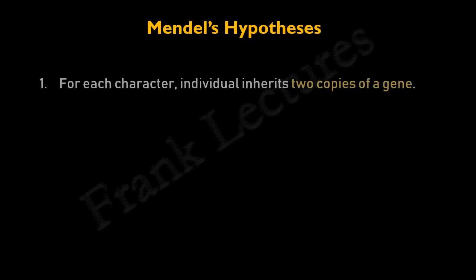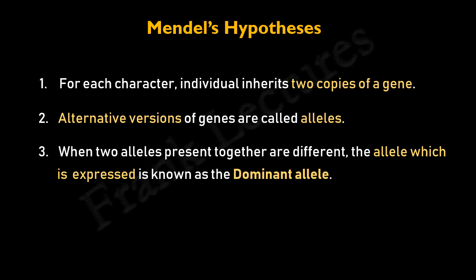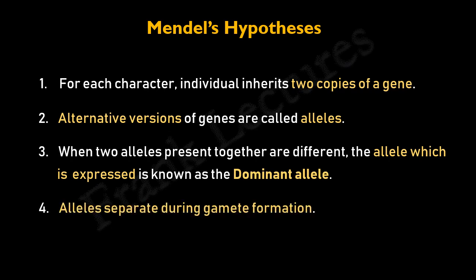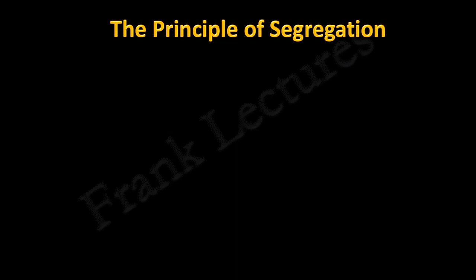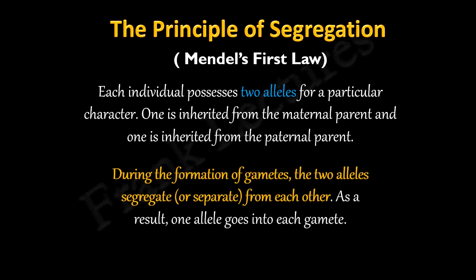Let's quickly recall the four hypotheses proposed by Mendel: first, for each character an individual inherits two copies of a gene; second, alternative versions of genes are called alleles; third, when two different alleles are present together, the allele which is expressed is known as the dominant allele; and fourth, alleles separate during gamete formation. These four hypotheses can be summarized as the principle of segregation, also known as Mendel's first law. According to this law, each individual possesses two alleles for a particular character — one inherited from the maternal parent and one from the paternal parent — and during gamete formation, the two alleles segregate so that one allele goes into each gamete.